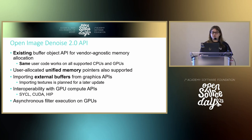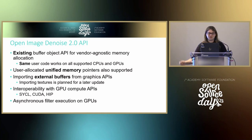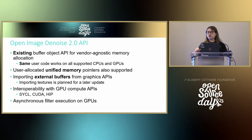How this works: we have an existing buffer object API for vendor-agnostic memory allocation — the same code path for both CPU and GPU denoising. We have user-allocated unified memory pointers, importing external buffers from graphics APIs, with textures coming soon. Interoperability with GPU compute APIs across SYCL, CUDA, and HIP, plus asynchronous filter execution on GPU.